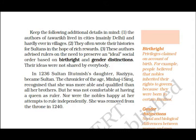In 1236, Sultan Iltutmish found his sons incapable and appointed his daughter Razia as Sultan. The chronicler Minhaj-i-Siraj recognized that she was more able and qualified than all her brothers as a ruler, but he was not comfortable having a queen as ruler. The other nobles also made several attempts to remove her, and finally she was removed from the throne in 1240 — she remained queen for only four years.